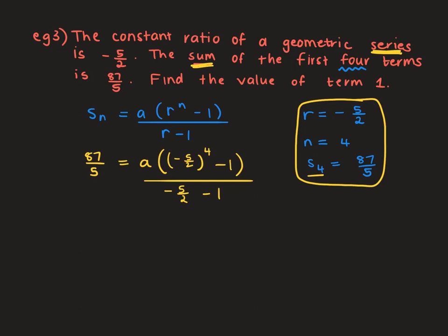This one has a lot less work compared to the other two — we're just substituting into the formula and then solving for A. The denominator simplifies to negative 7 over 2. We multiply both sides by that, then divide both sides by the bracket. Computing negative 5 over 2 to the power of 4 minus 1 on the calculator gives 609 over 16.